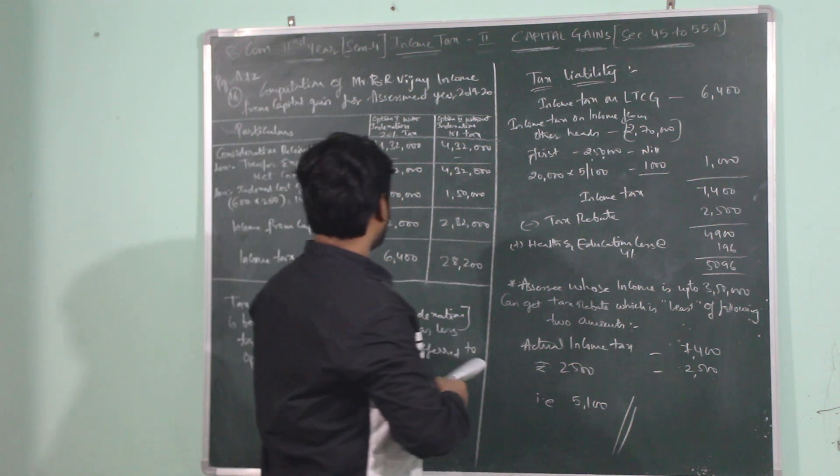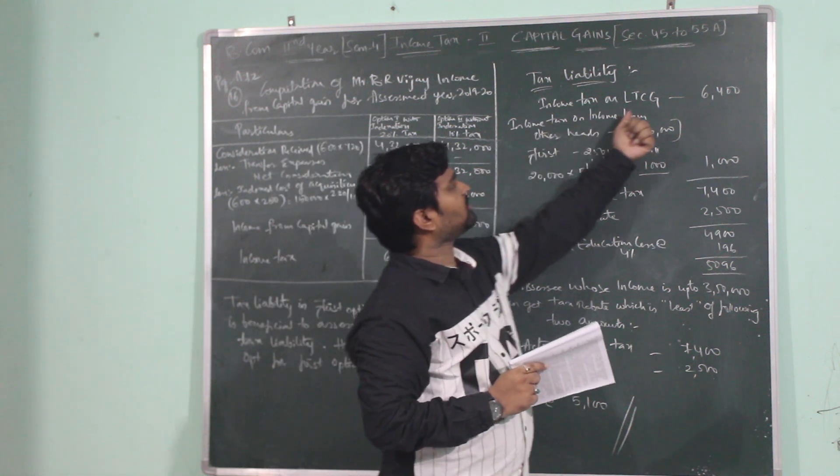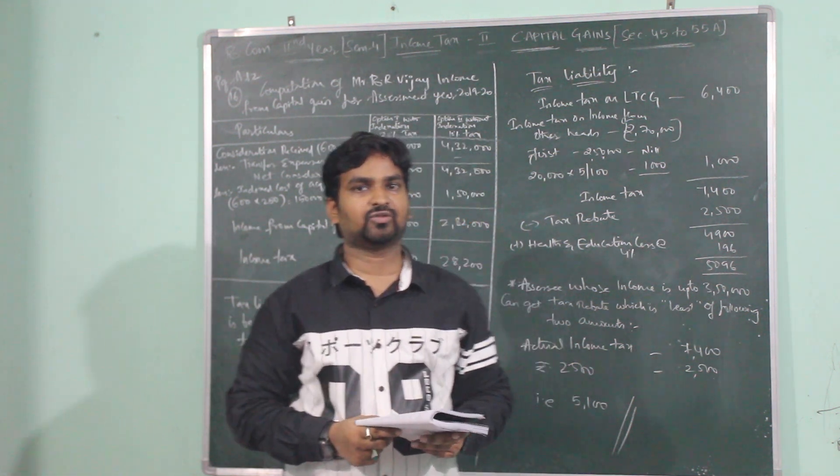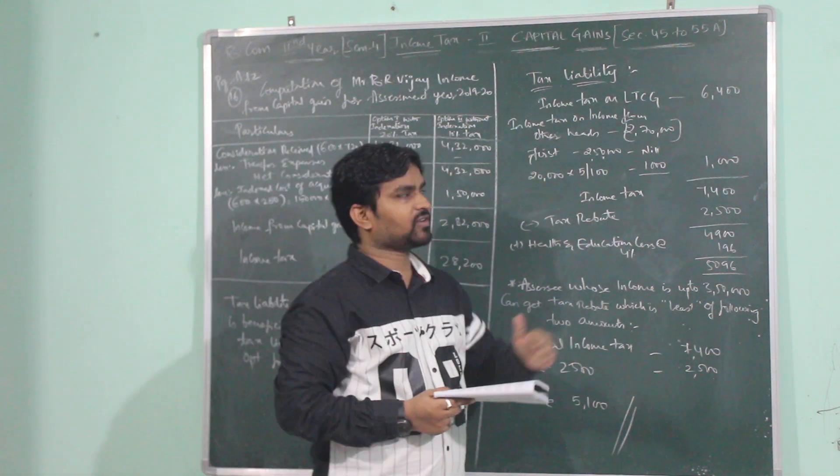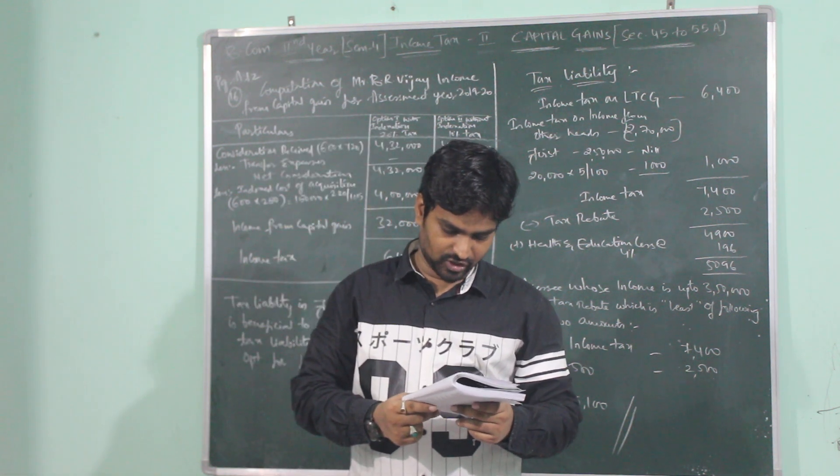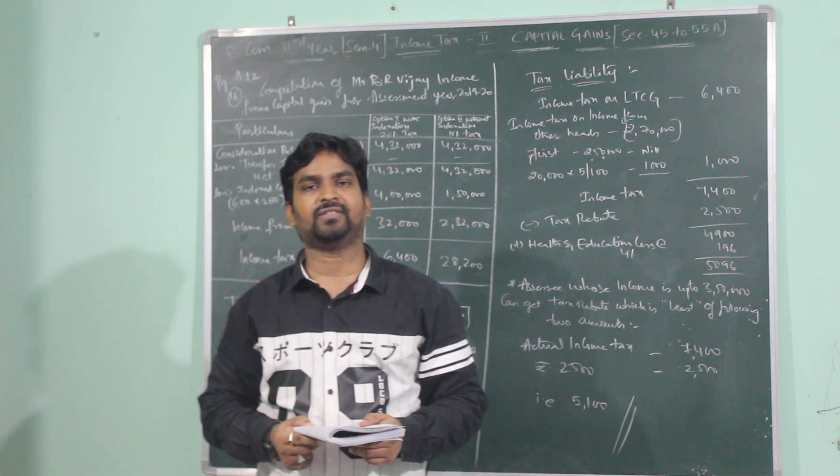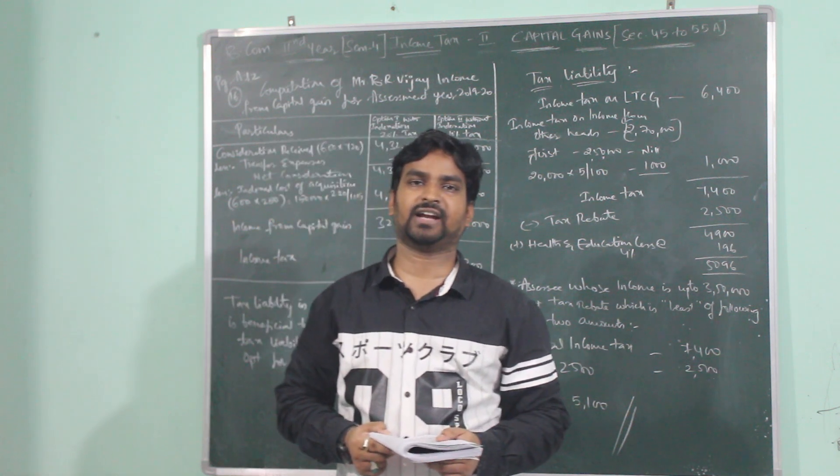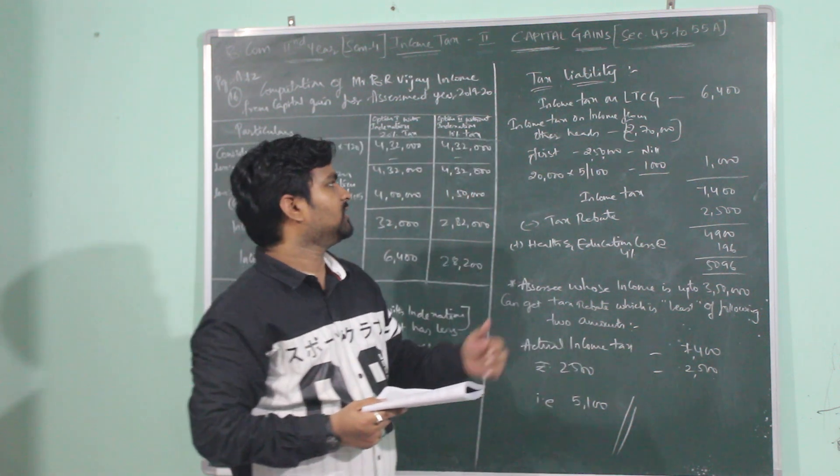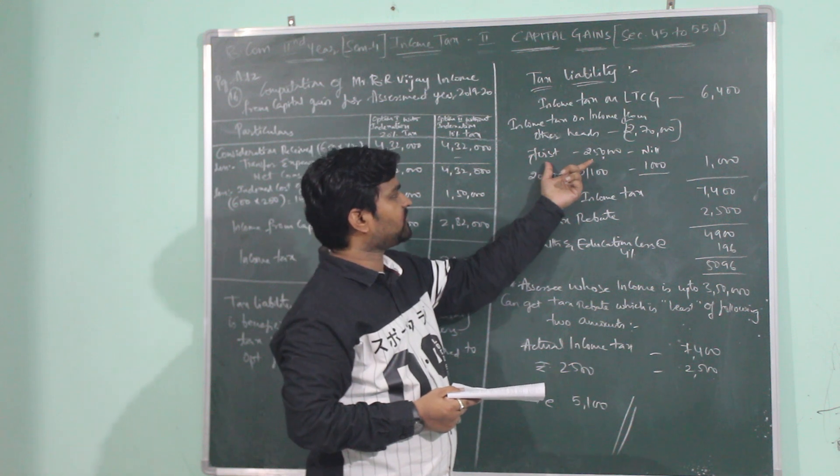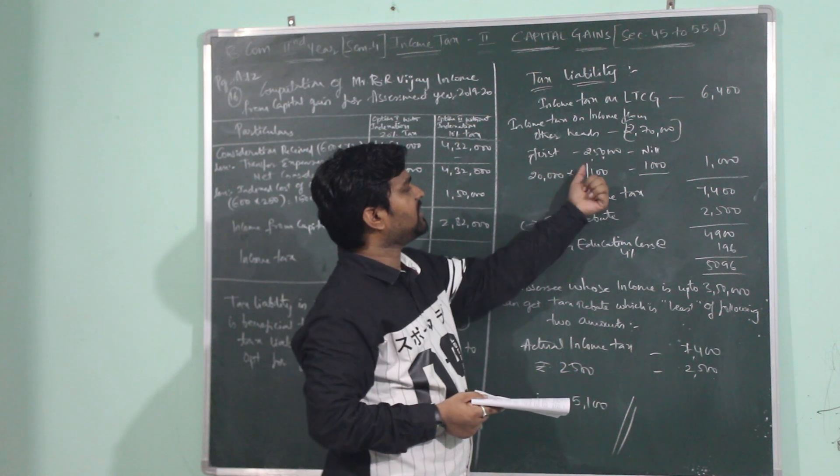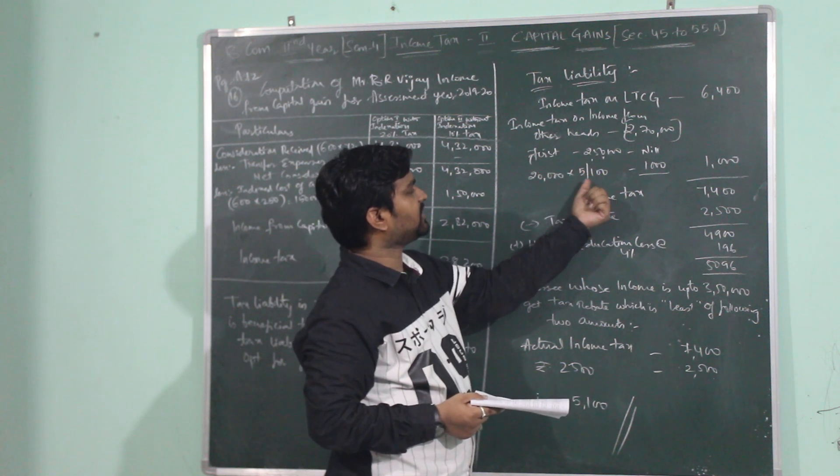The assessor also has income from other heads which is 2,70,000. Income from other heads will be taxed on slab basis. As the age of the assessor is not specified in the question, he will be considered as non-senior citizen whose age is less than 60 years and for whom basic exemption limit will be 2,50,000. For first 2,50,000 the tax liability is nil. Next slab, 2,50,001 to 5,00,000 is taxed at 5%.